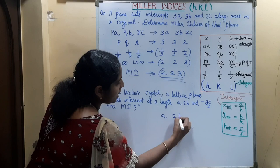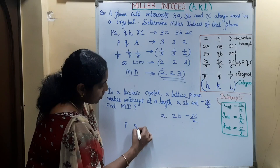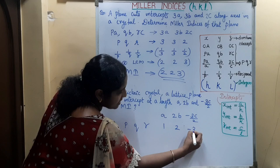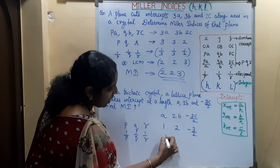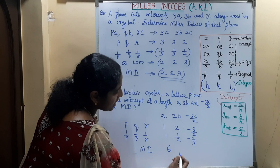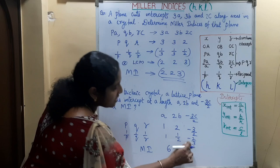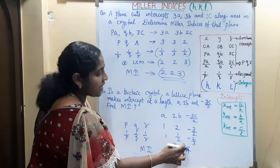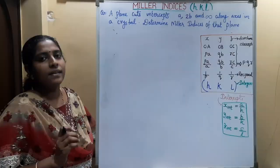Next problem: In a triclinic crystal, a lattice plane makes intercepts A, 2B, and −3C/2. Find the Miller indices. The coefficients P, Q, R are 1, 2, and −3/2. Taking the reciprocal gives 1, 1/2, −2/3. Multiplying by LCM = 6: 6, 3, −4. Since the z-intercept is negative, we place a bar over 4. The Miller indices are (6, 3, 4̄).